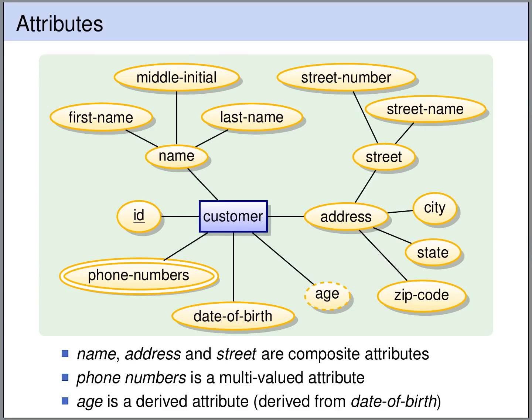Composite attributes can also be multi-valued. For example, if we want to allow that a customer can have multiple different addresses, we could put a double line around the address to indicate that this attribute is multi-valued.